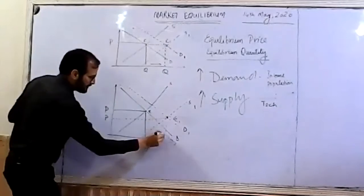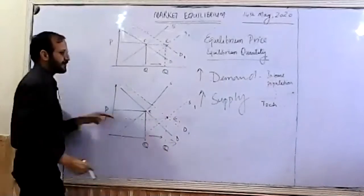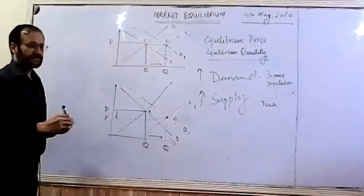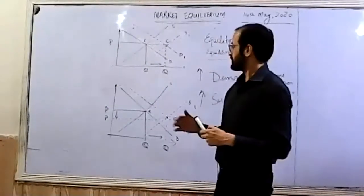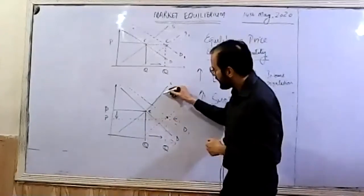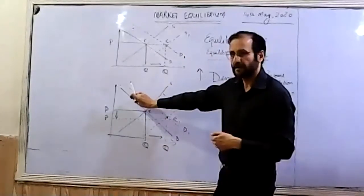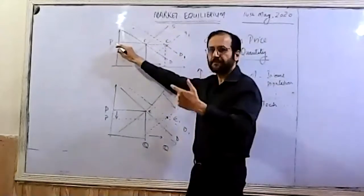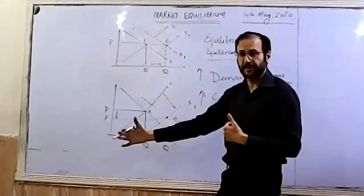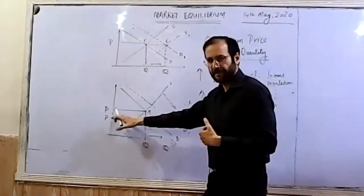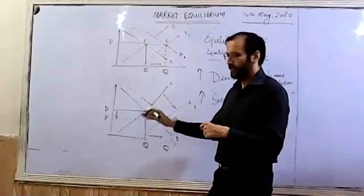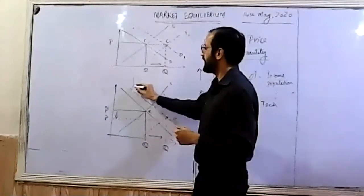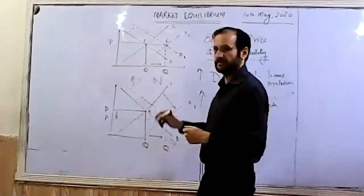In the second diagram, the situation is different. Demand increases from D to D1 and supply increases from S to S1, giving a new equilibrium at E1 - but this time the price is actually falling. This happens because supply is increasing more than demand. Conversely, when demand is increasing more than supply, prices rise. So sometimes a question might ask: if price is increasing, how could demand fall? This diagram provides the answer.